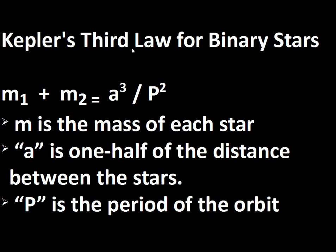Kepler came up with a law for planetary motion. For the solar system, the mass of the Sun is much bigger than any planet mass, so we don't really have to include two masses. But this equation can be written so that if we add the two masses of the stars, we'll find it equals the cube of the distance between the stars divided by the period squared. Period is the time once around the orbit. Astronomers can measure the sizes of the orbits of the stars and how long it takes one star to go around the other, and from that we get the sum of the two masses of the system.